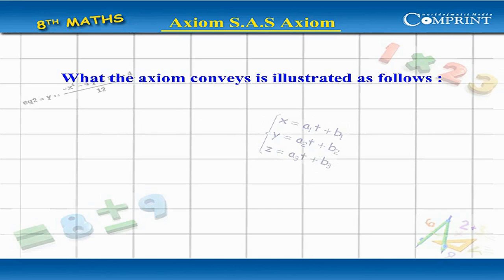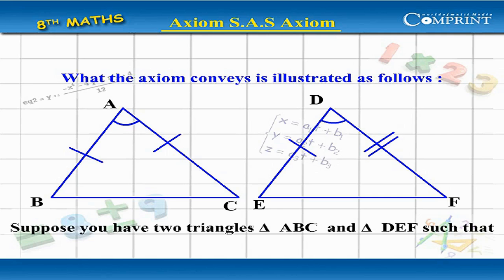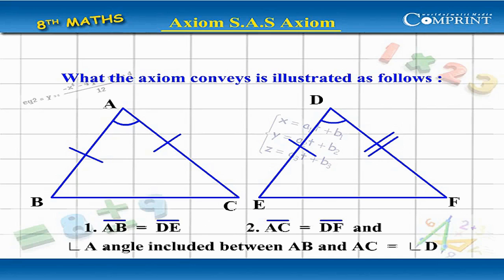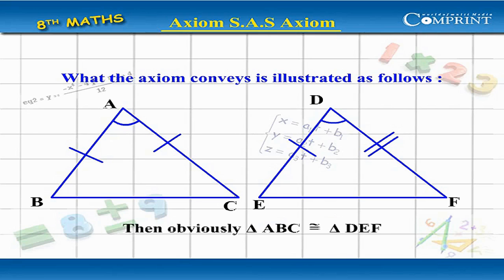What the axiom conveys is illustrated as follows: Suppose you have two triangles, ABC and DEF, such that AB = DE, AC = DF, and angle A = angle D. Then triangle ABC is congruent to triangle DEF.